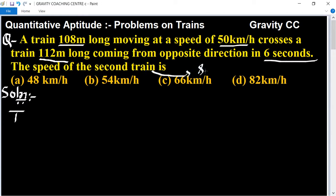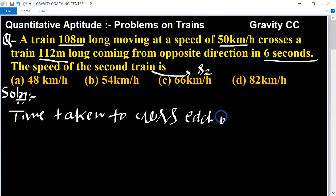Time taken to cross each other equals: the length of the first train plus length of the second train upon, both trains are opposite side, so that's S1 plus S2 into 18 upon 5.